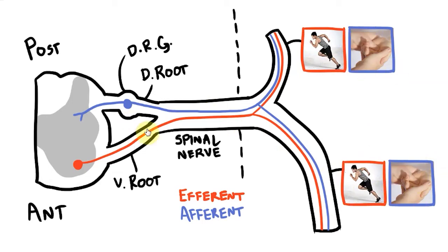If the dorsal root was damaged we'd see the opposite. No sensory information would be able to return from the rami but their motor function would be normal.